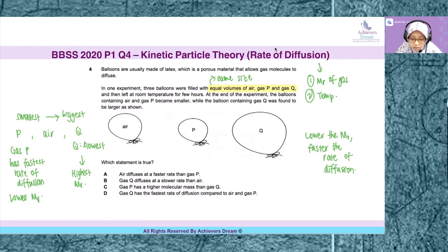So let's take a look at the options given to determine which statement is true and which statements are false. Option A, air diffuses at a faster rate than gas P. This is wrong because air is in the middle, it is not the smallest, it is not the biggest. It is bigger than the balloon containing gas P, however, meaning that air diffuses at a slower rate than gas P. Hence, statement A is false.